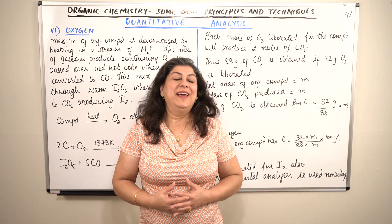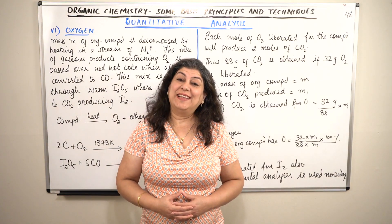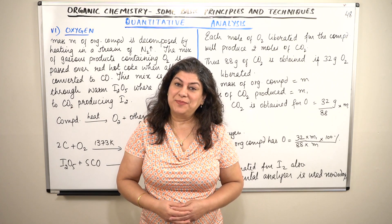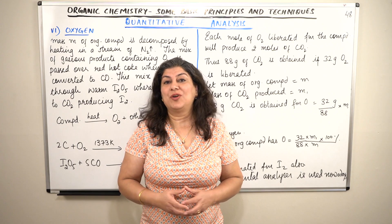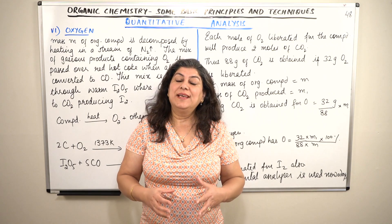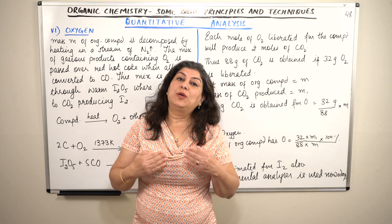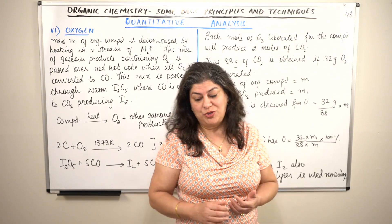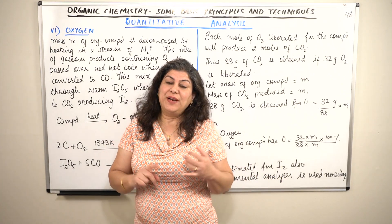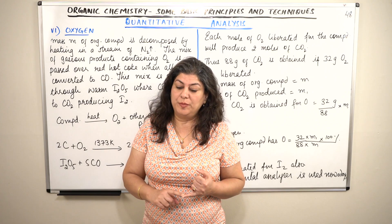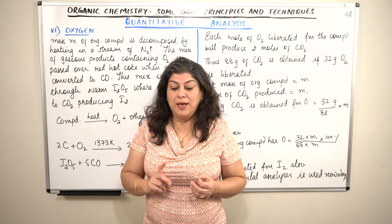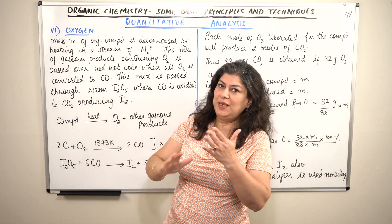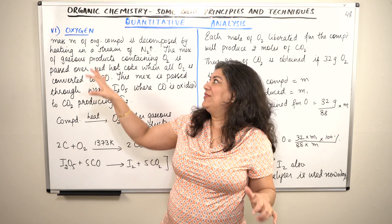Hello, I am Seema and welcome to part 48 and the last part of the chapter 'Organic Chemistry: Some Basic Principles and Techniques.' We were doing the quantitative analysis of organic compounds, and we have now found out how to determine the mass percentages of all elements except oxygen — that is, carbon, hydrogen, nitrogen, halogens, sulfur, and phosphorus. Now the only element left is oxygen.